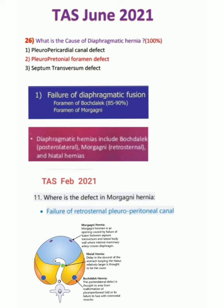In the image attached below, we can see the locations of the hernias. Morgagni hernia is the upper one, hiatus hernia is in the middle, and Bochdalek hernia is the lower one. Regarding hiatal hernia, delay in the descent of the stomach — keeping the hernia relatively larger — is thought to be the cause.